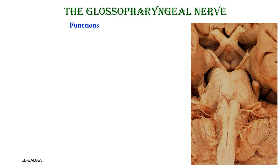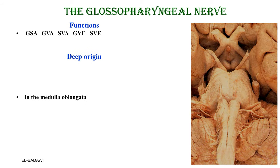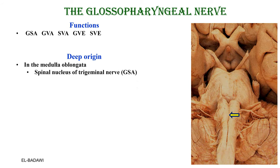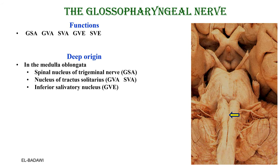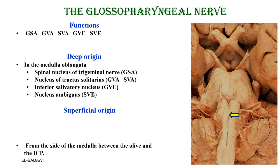Now let's start with the glossopharyngeal nerve. It has five functions: general somatic afferent, general visceral afferent, special visceral afferent, general visceral efferent, and special visceral efferent. The nuclei of origin are in the medulla oblongata: the spinal nucleus of the trigeminal, the nucleus tractus solitarius, the inferior salivatory nucleus, and the nucleus ambiguus — these are the four nuclei for the glossopharyngeal nerve.